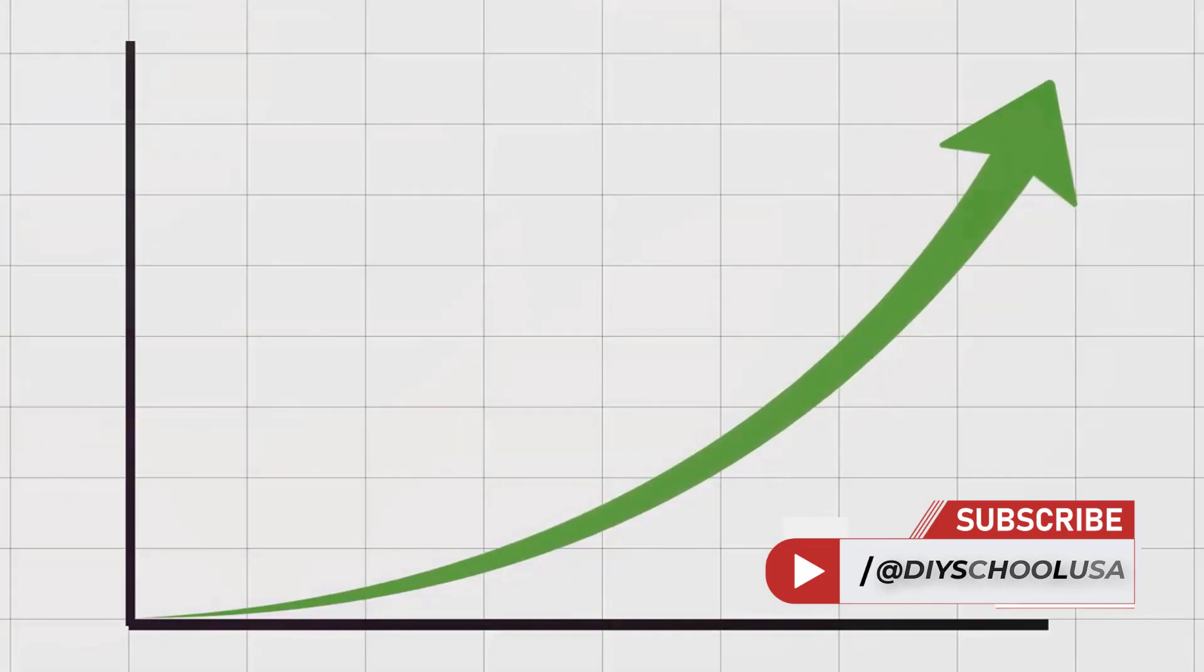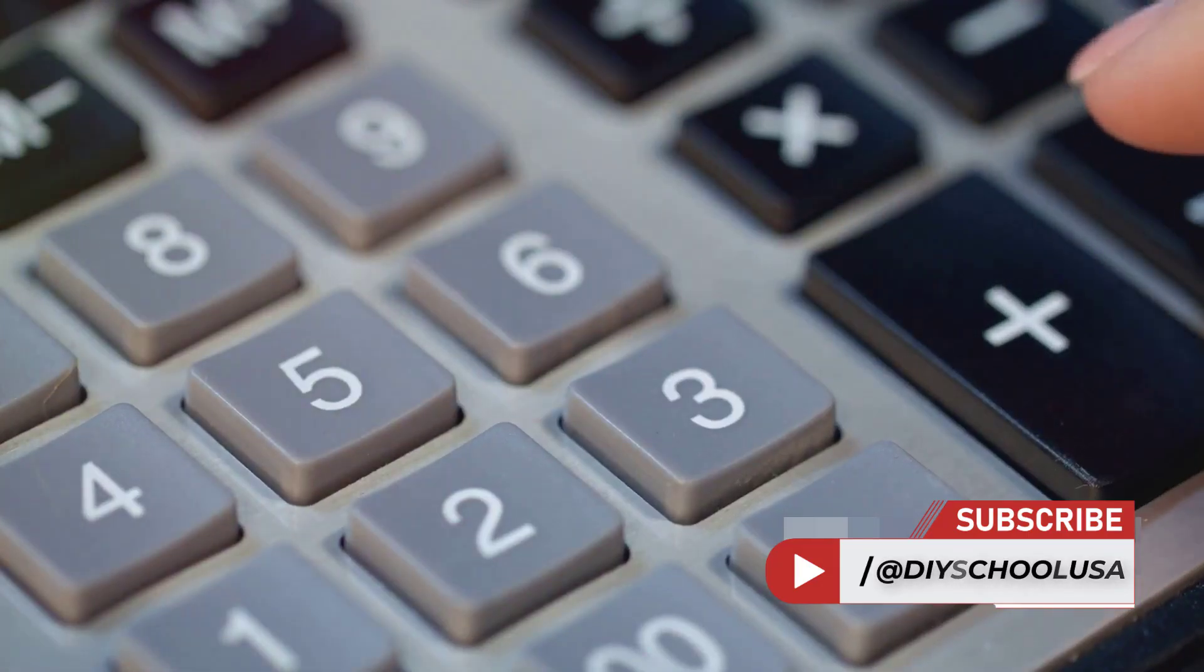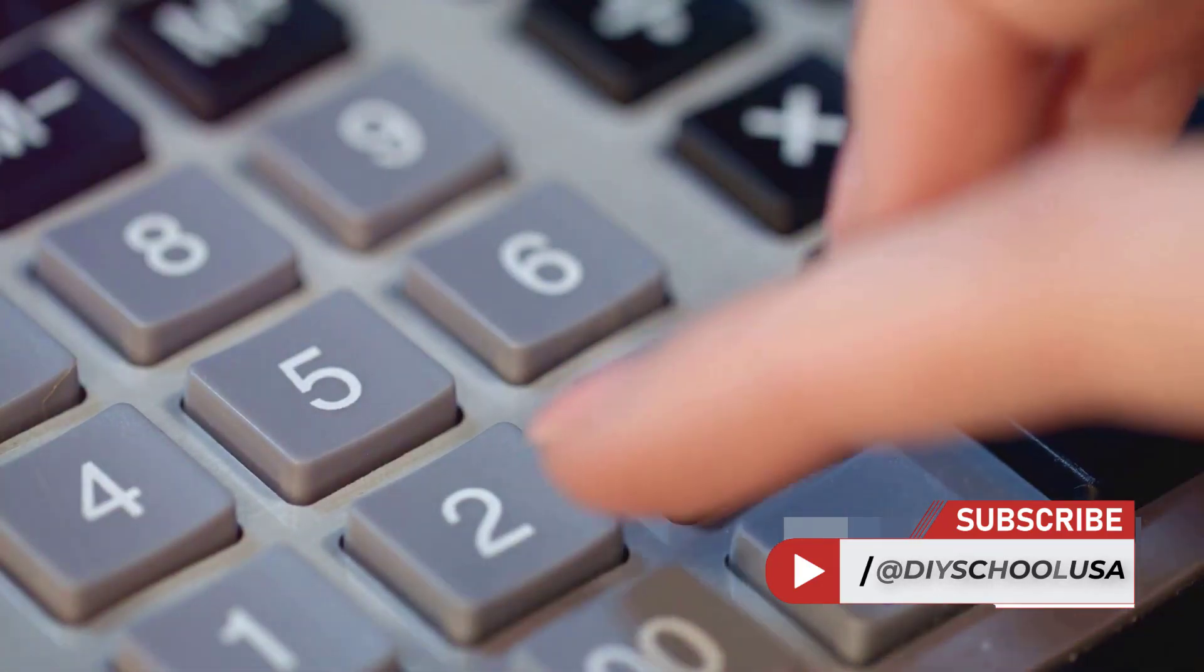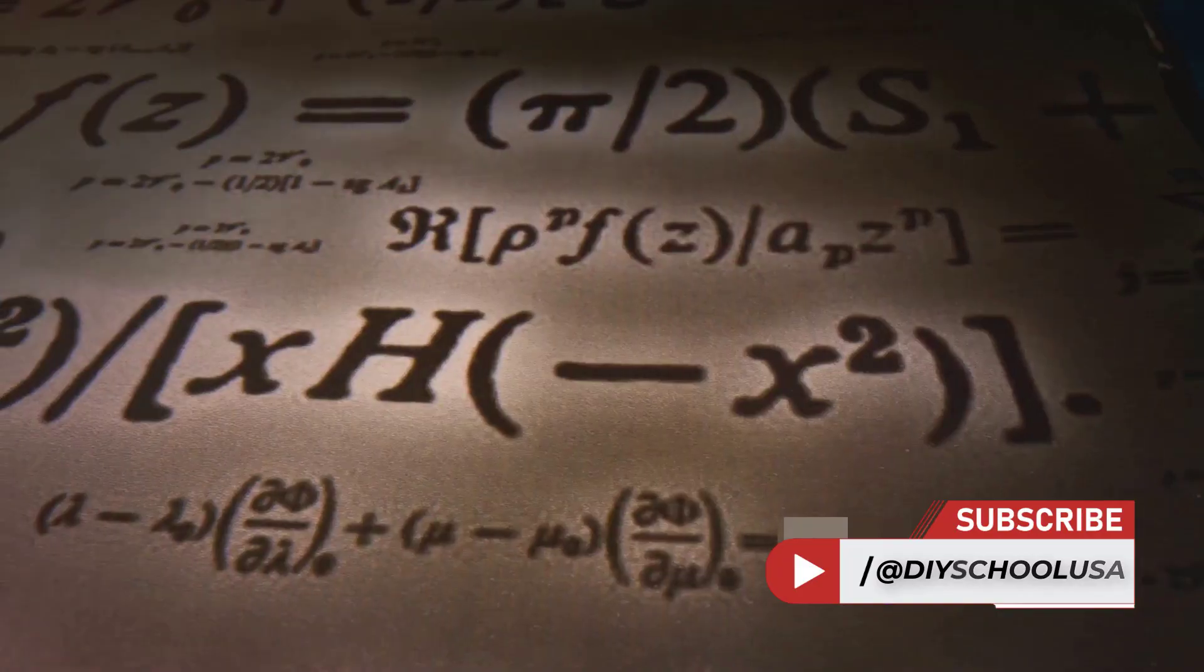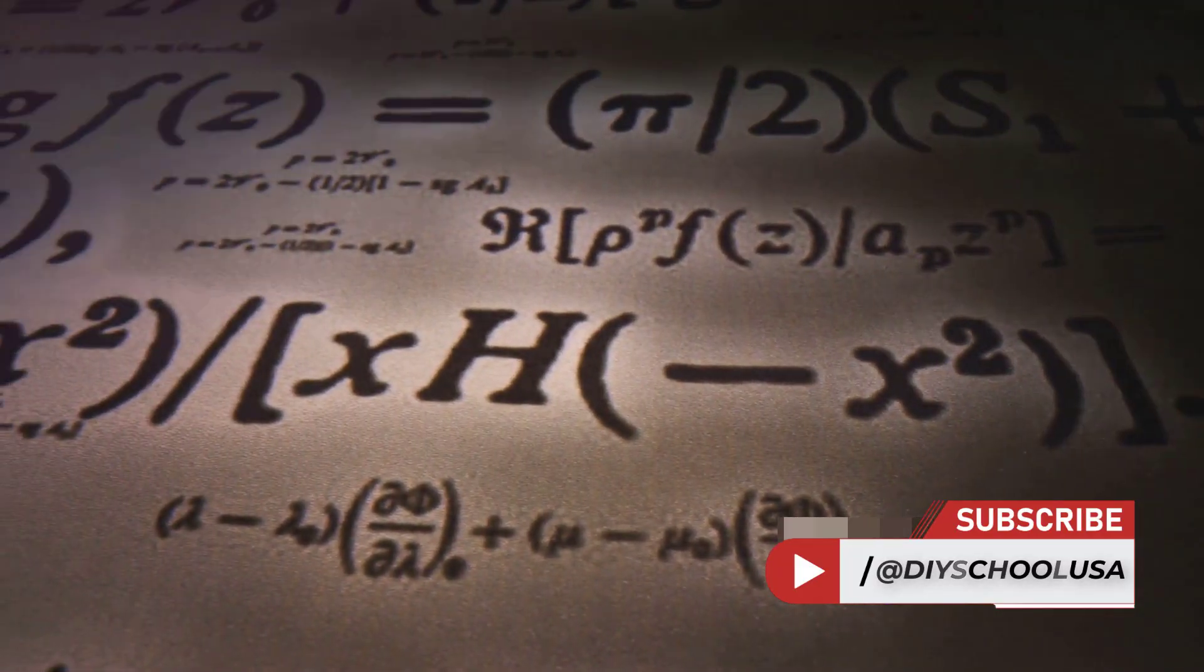Their algebraic prowess was not limited to solving equations. They also had a deep understanding of exponential growth, doubling time, and interest rates, demonstrating a level of sophistication that was far ahead of their time.